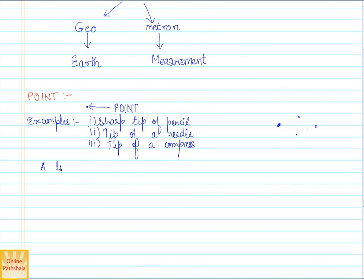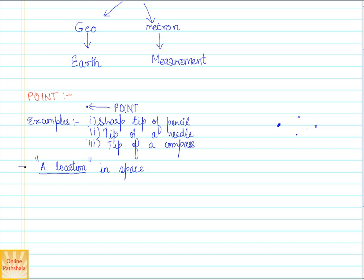So what does a point imply? A point implies a location — that is very important to understand. It simply implies a location. This point on the paper is implying a specific location in that space. All the points we used to represent stars in the sky are implying different locations. So a point implies a location in space.